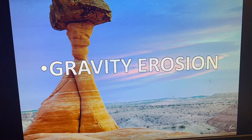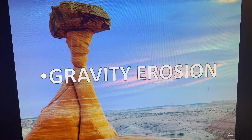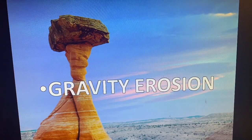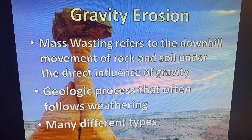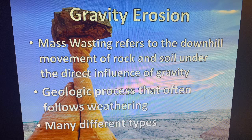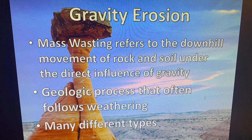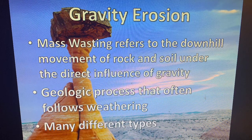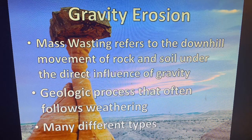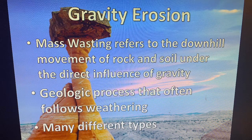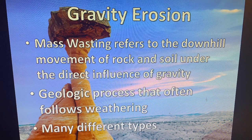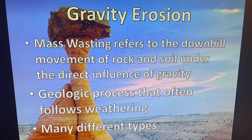The first agent of erosion we'll discuss in depth is gravity, commonly referred to as mass wasting. Mass wasting is the downhill movement of rock and soil under the direct influence of gravity. This is a geologic process that usually follows generic types of weathering — things like frost wedging or abrasion — and the little bits of sediment left at the top of a hill get pulled down by gravity.